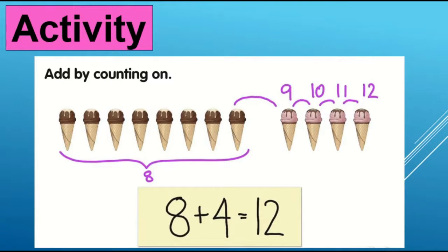First of all we will do activity number 1 to make your concepts more clear, add by counting on. Look at these cone ice creams. Let's count with me how many cones are here. 1, 2, 3, 4, 5, 6, 7, 8. So write down 8.